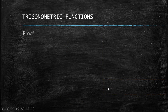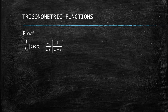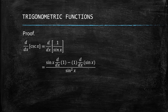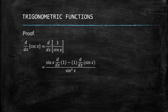Now the proof for csc(x): similarly, we use the reciprocal identity csc(x) = 1/sin(x). Applying the quotient rule gives us [sin(x)·(derivative of 1) − 1·(derivative of sin(x))] all over sin²(x).